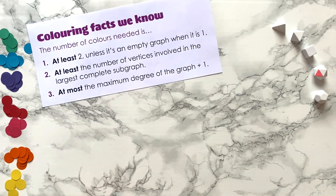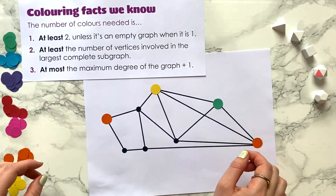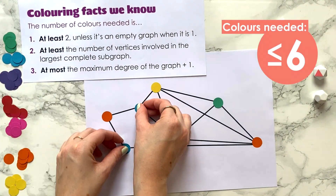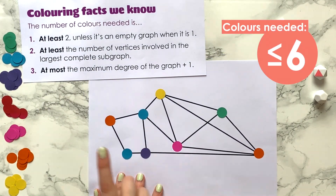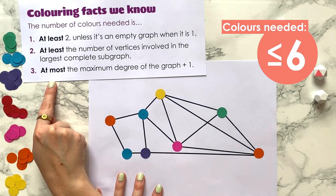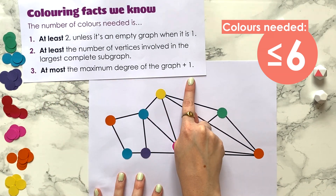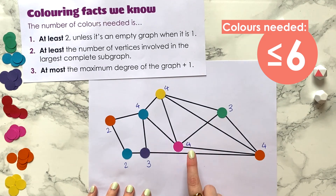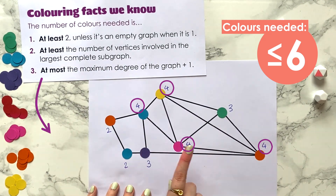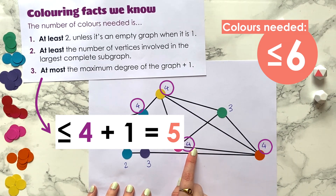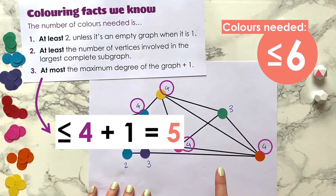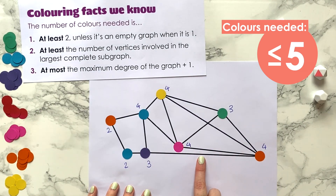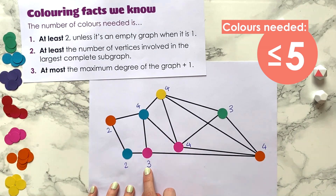Let's return to our first graph. At the start of the video, we found a colouring using six colours — was this the fewest colours needed? Let's look at the upper bound first. We know the number of colours needed is at most the maximum degree of the graph plus one. We can see the maximum degree is four, so we need at most five colours. So we've done six colours but we can do better. If we swap the purple vertex with a pink one, we still have a valid colouring using only five colours.